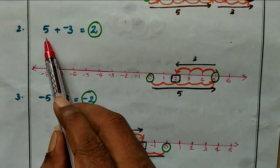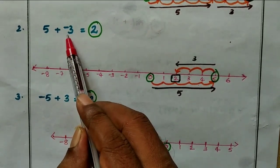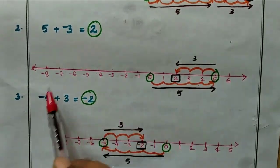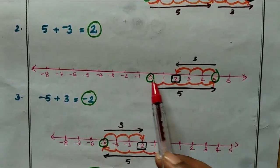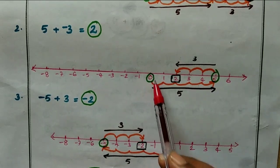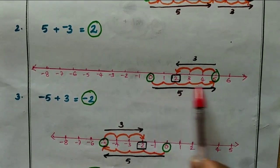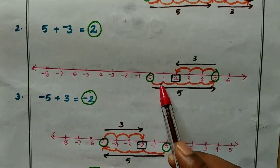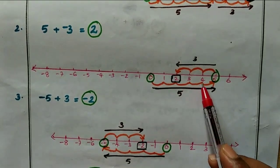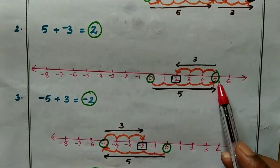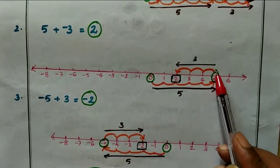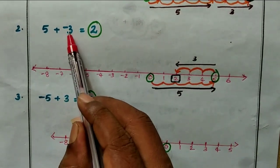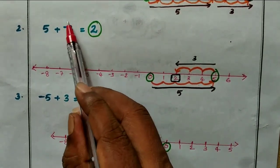Second example: 5 plus minus 3 equals dash. Using the number line, start from 0 and move right to position 5 — that is 1, 2, 3, 4, 5. This is the position of 5. Now we add minus 3, which is negative 3.